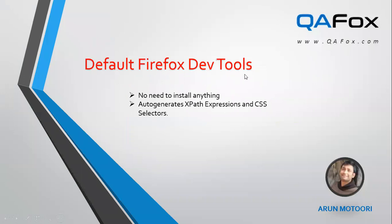Default Firefox dev tools. We used to have two add-ons in Firefox browser, that is Firebug and Firepath, which got deprecated now. Using those, we used to auto-generate and validate the XPath expressions and CSS selectors efficiently. But they are now deprecated and discontinued and we no longer can use them. To fill the gap, there came a good number of alternatives, in which default Firefox dev tools is one of them. So in this video tutorial, I am going to explain how to auto-generate the XPath expressions and CSS selectors using this default Firefox dev tools.